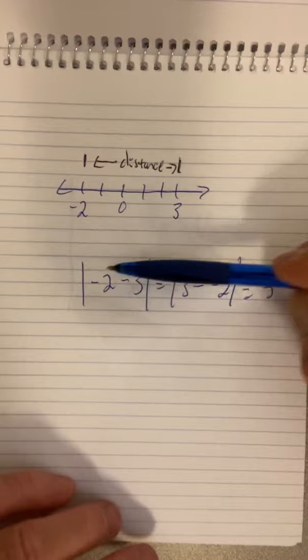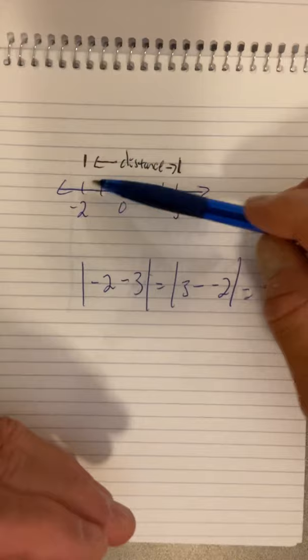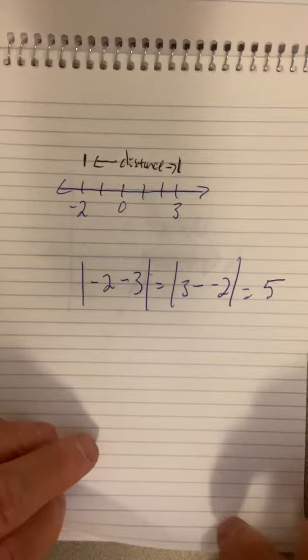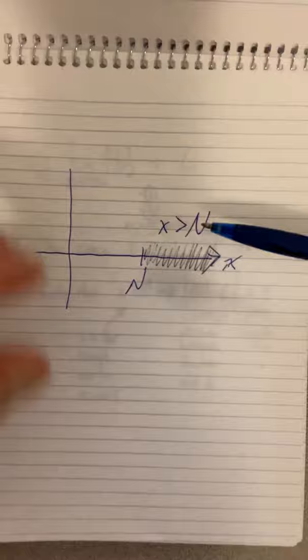We get absolute value, so negative 2 minus 3 is negative 5, but we're talking about the distance from here to here, so we make it 5. Same thing if I go 3 minus negative 2, I get 5 and the absolute value of 5 is 5. So when you see absolute value, it just means the distance between those quantities.